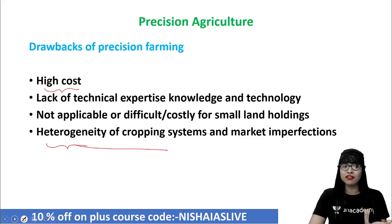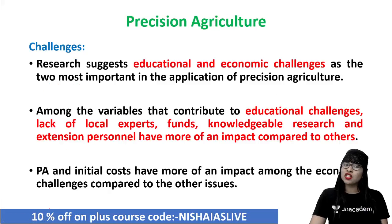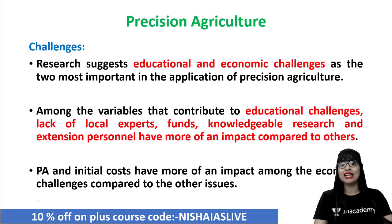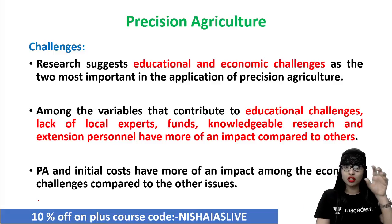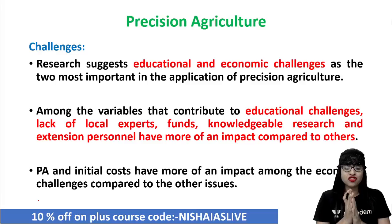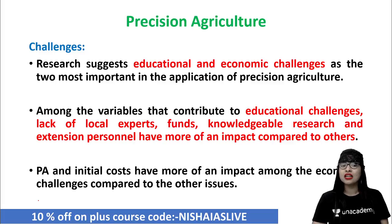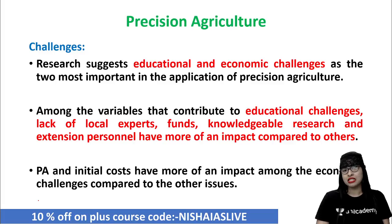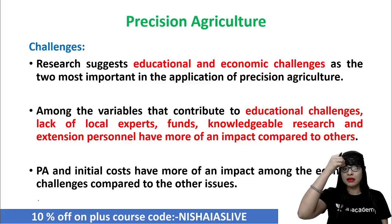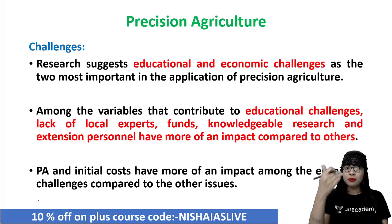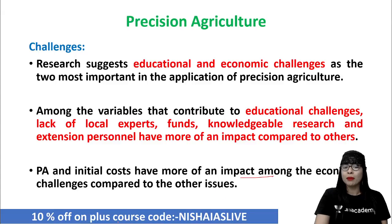There are so many benefits, but what are the challenges with regard to our country India? As per research, educational and economic challenges are the most important in the application of precision agriculture. Among the important variables contributing to educational challenges are the lack of local experts, funds for finance, and knowledgeable research and extension personnel. Precision agriculture and the initial cost have more of an impact among the other economic challenges.